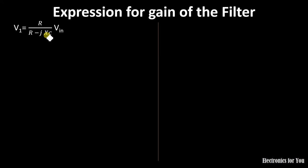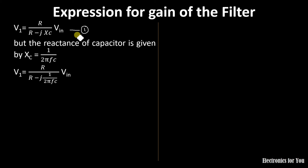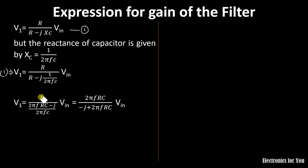The value of Xc is 1/(2πFC), where Xc is the capacitive reactance. Substituting Xc = 1/(2πFC) into our equation, and simplifying by multiplying 2πFC with R, we get V1 = R / (2πFRC − j) / (2πFRC). Sending the denominator to the numerator gives us the numerator as 2πFRC divided by (−j + 2πFRC).